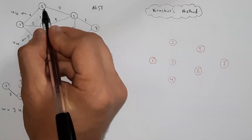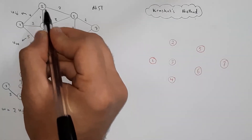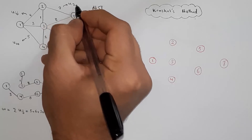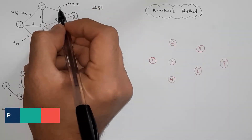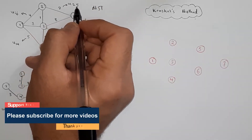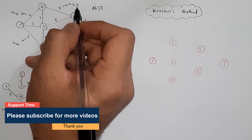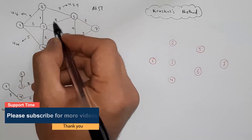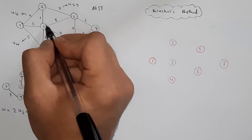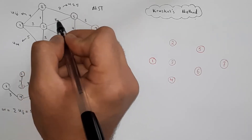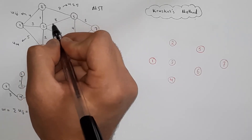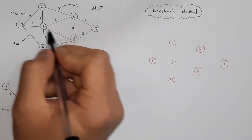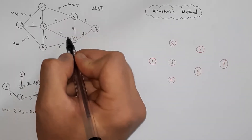And these are the weights of this undirected graph. For example, this is the weight between node 2 and node 5, which we call U25 — the weight between node 2 and node 5 is 7. And this is the weight between node 3 and node 5, which we call U35. So these are the UIJs in this undirected graph.